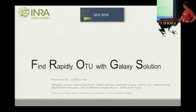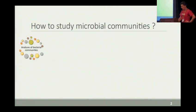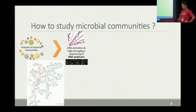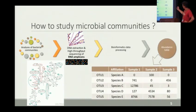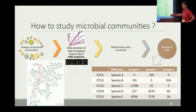I will speak about FROGS, which is a tool suite dedicated to find rapidly OTUs with a Galaxy solution. When you study microbial communities, you can use 16S RNA extraction sequencing to obtain some RNA amplicons. After the bioinformatics data processing part, the goal is to have an abundance table where you have OTUs and related species, and you can analyze in each sample the different representation of each OTU — each species.